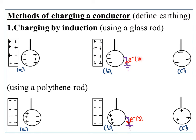After that, bring a charged polythene rod — remember, a polythene rod is usually negatively charged — close to but not touching the ball. Then observe what happens.